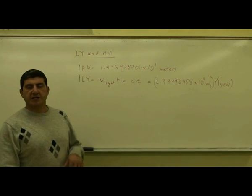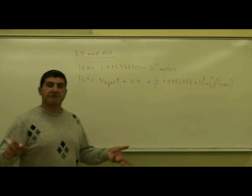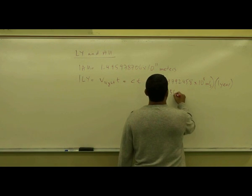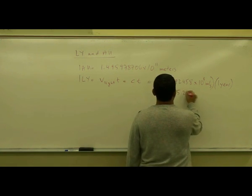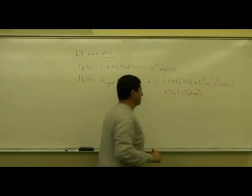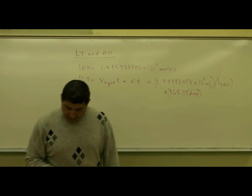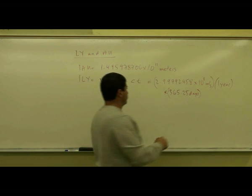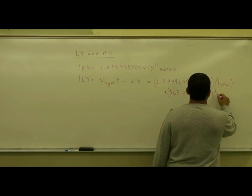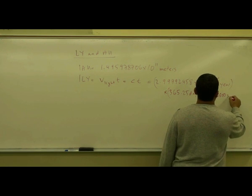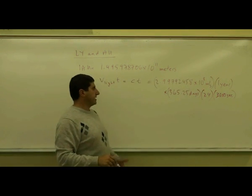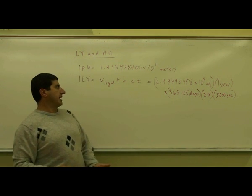1 year would be approximately 365 and a quarter days. So you multiply this by 365 and a quarter days. It's not exactly exactly. And then 1 day is 24 hours, and then each hour is 3,600 seconds. So you multiply it by the number of days in the year, number of hours per day, and number of seconds per hour.